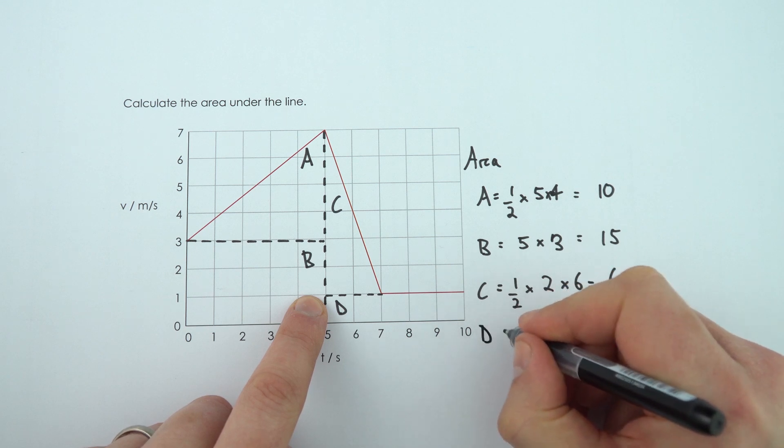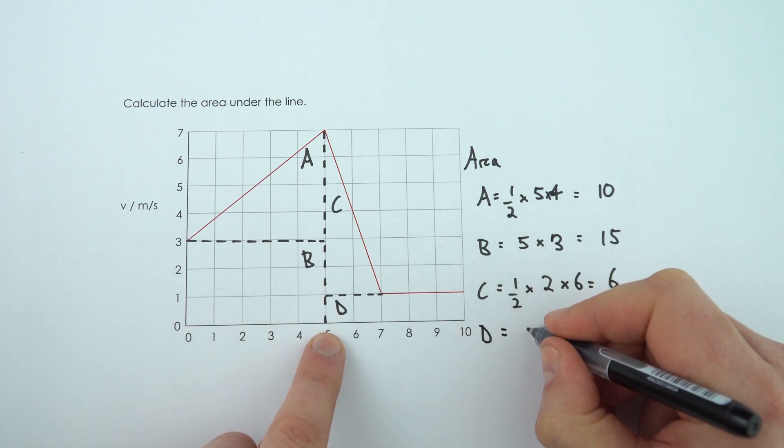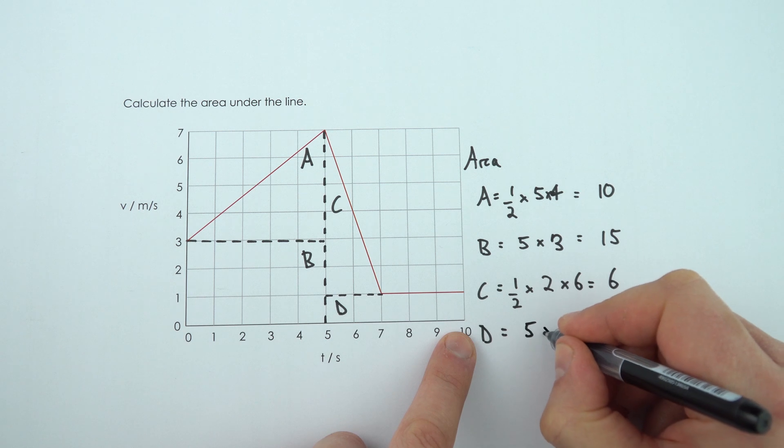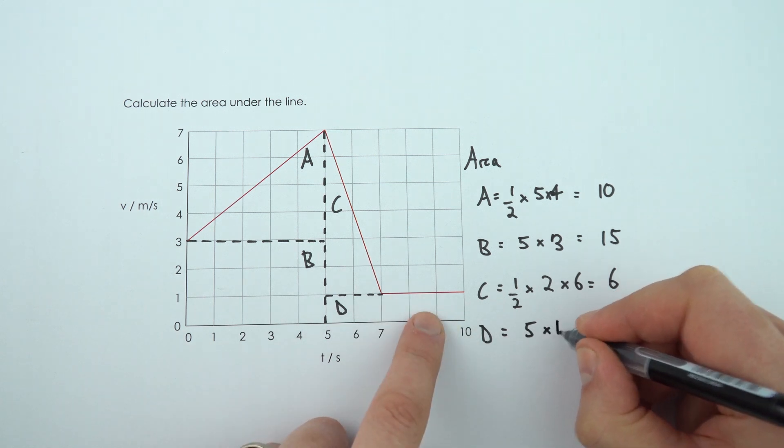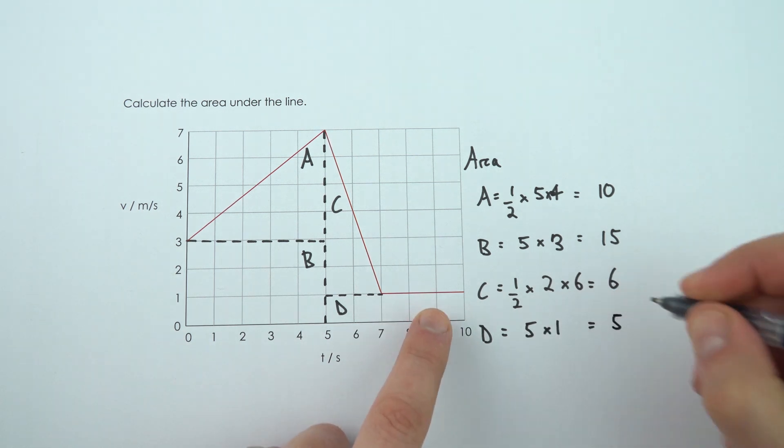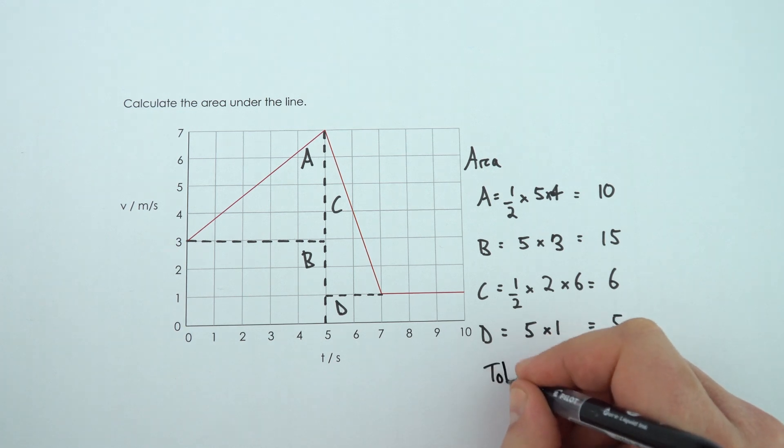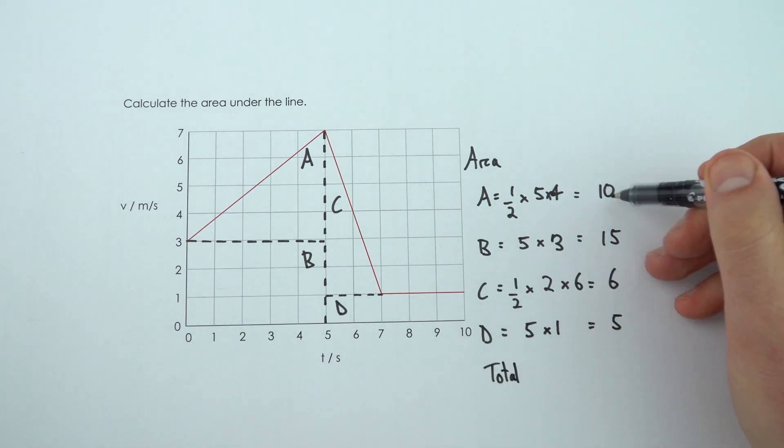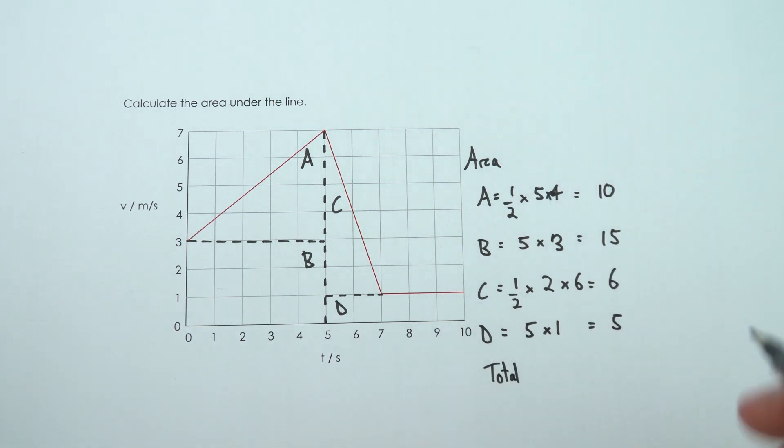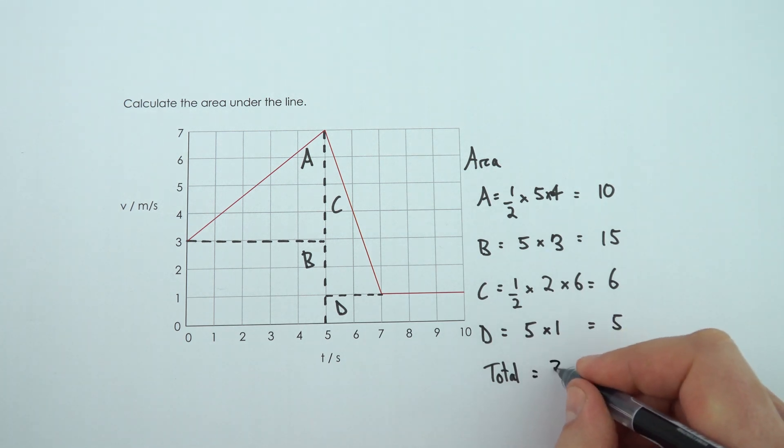And finally, area D is another rectangle. The base goes from 5 to 10, so that's 5 multiplied by the height of 1, which equals 5. So the total area in this case is equal to 10 plus 15 plus 6 plus 5, which is equal to 36.